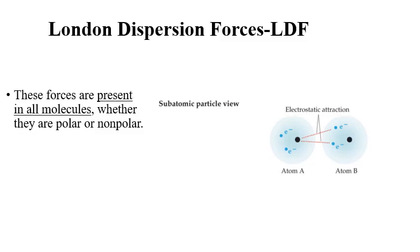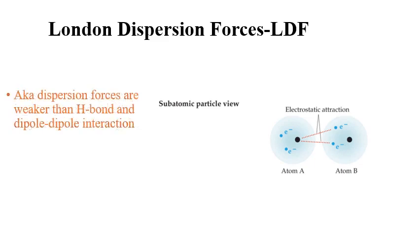This type of attraction we call London dispersion forces, and this is the dominant IMF in non-polar molecules. It is present in all molecules, whether non-polar or polar. In polar molecules, the dominant IMF is either dipole-dipole or hydrogen bond, whereas in non-polar molecules the dominant IMF is LDF. London dispersion forces, or LDF, is also known as dispersion forces. It is weaker than hydrogen bonds as well as dipole-dipole interaction, but it can add up to a stronger attraction.